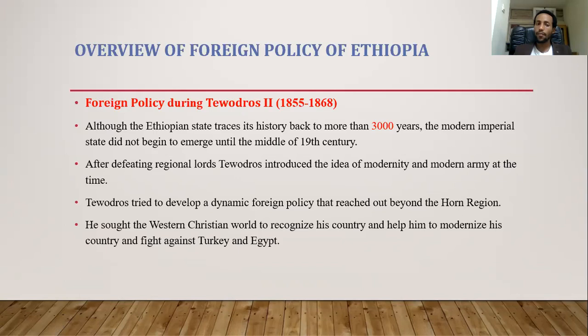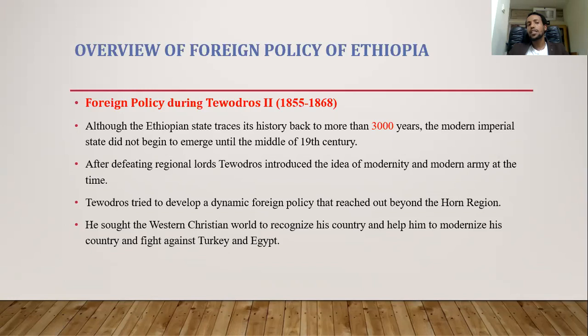As a country, Ethiopia has its own foreign policy, which differs across different regions and time periods. We will see an overview of Ethiopia's foreign policy over the past 150 years. Ethiopia has more than 3,000 years of civilization, but modern foreign policy started in the 19th century with Emperor Tewodros II. We will cover Tewodros, Menelik, Haile Selassie, the Derg, and the EPRDF — each of whom had different types of foreign policy.